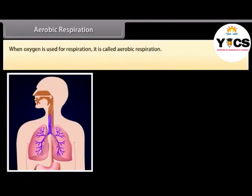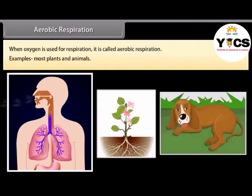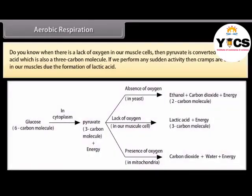When oxygen is used for respiration, it is called aerobic respiration. Examples include most plants and animals. When there is a lack of oxygen in our muscle cells, pyruvate is converted into lactic acid, which is also a 3-carbon molecule. If we perform any sudden activity, cramps are caused in our muscles due to the formation of lactic acid.